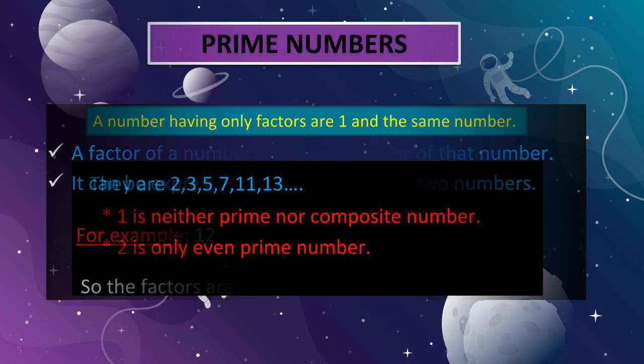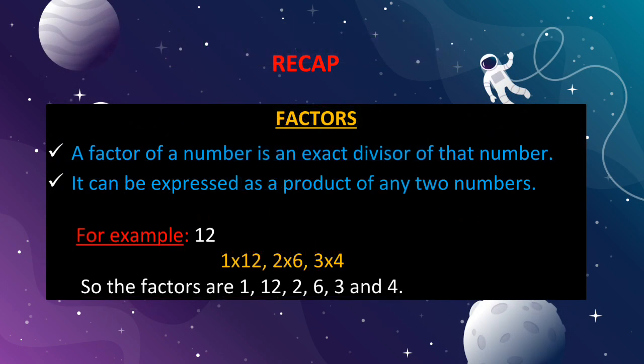Factors. A factor of a number is an exact divisor of that number. It means that each and every factor of a number will divide the number leaving remainder 0. It can also be expressed as a product of any two numbers. For example, 12: we can say 1×12, 2×6, 3×4. So the factors of 12 are 1, 2, 3, 4, 6, and 12.